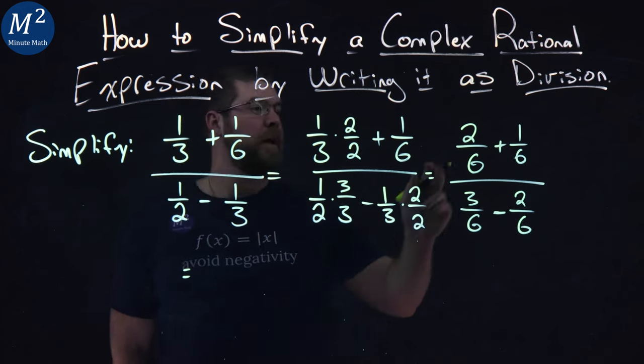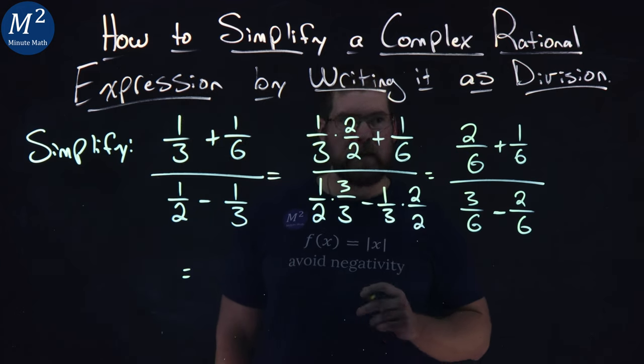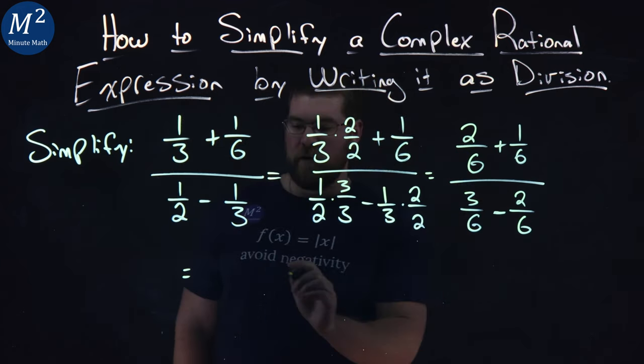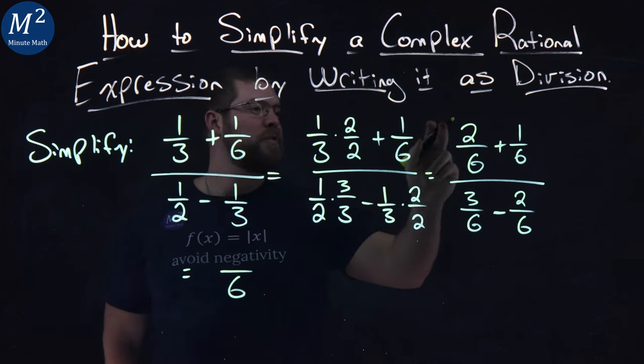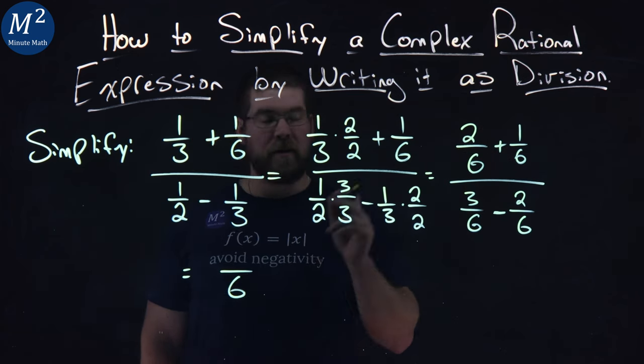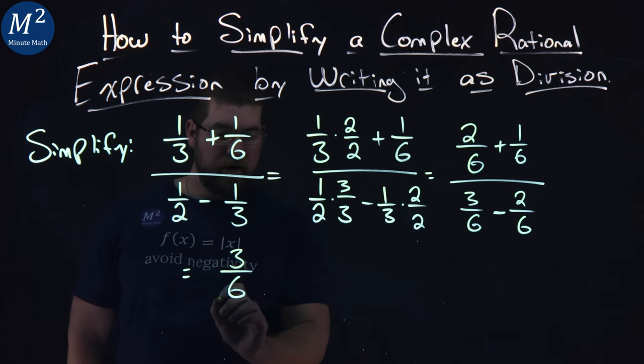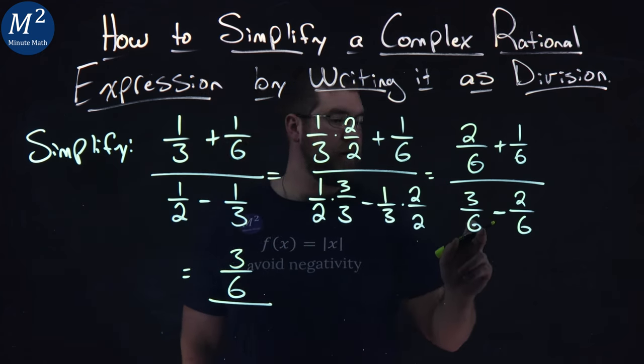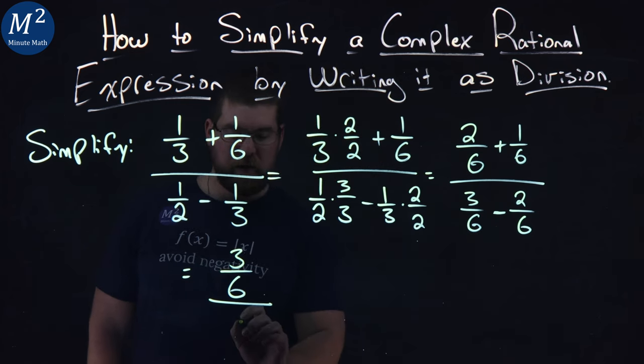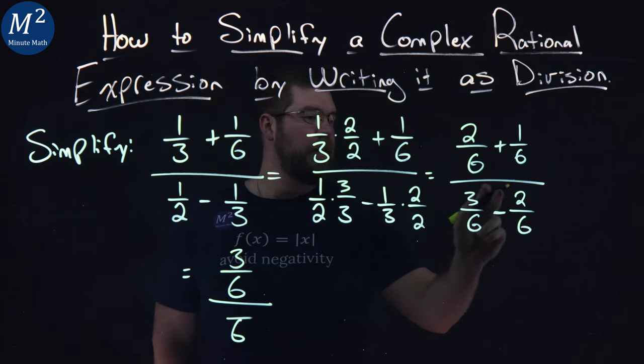Keep simplifying here. We have 2/6 plus 1/6. We combine the underneath, we have 6 here, and 2/6 plus 1/6 is 3. We have 3/6 here, divided by... keep the fraction going. We have 6 down here in the denominator still, and 3 minus 2 is 1.